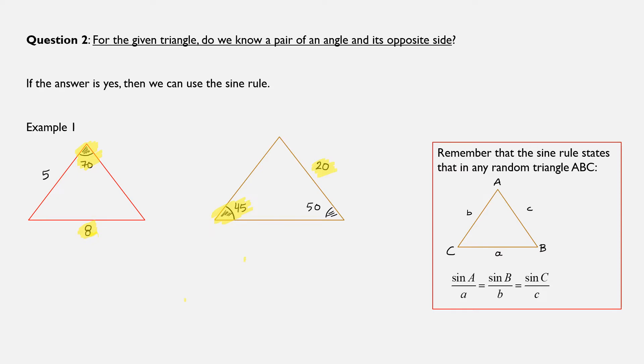For example, on the left triangle we see in front of you, we can see that we were given an angle of 70 degrees and we were given the corresponding opposite side. Same thing in the right triangle. We were given an angle of 45 degrees and the corresponding opposite side. So in both of these triangles, we know a pair of an angle and its opposite side.